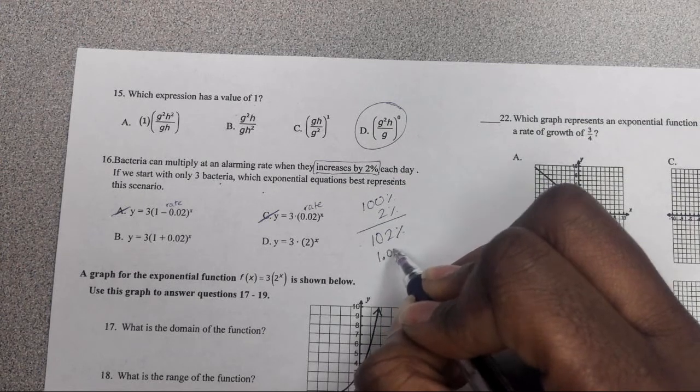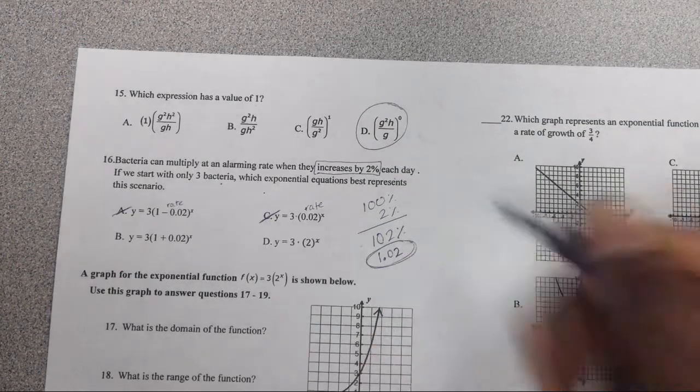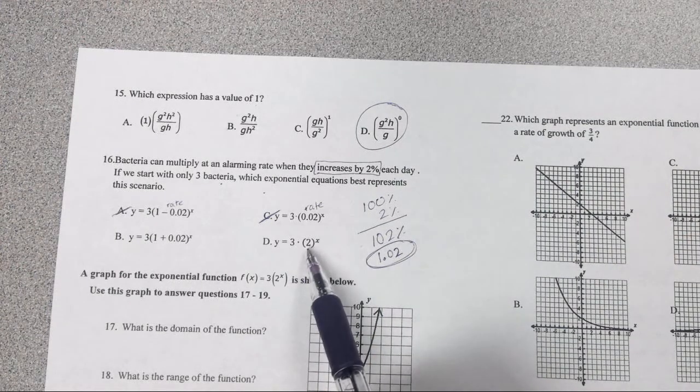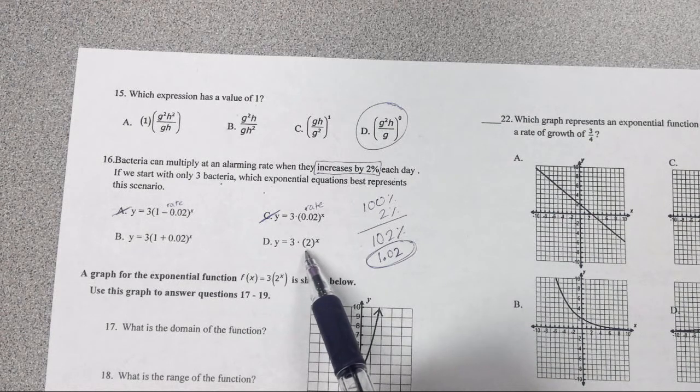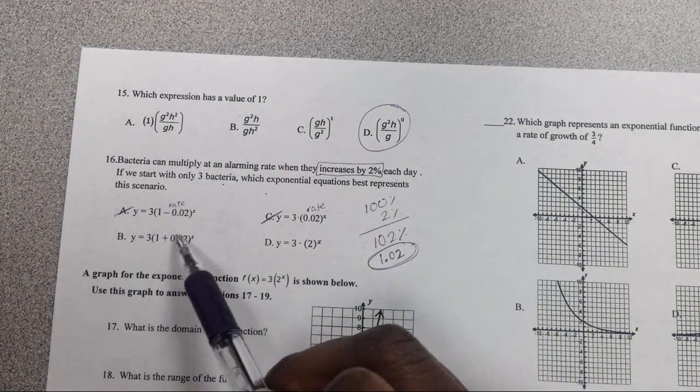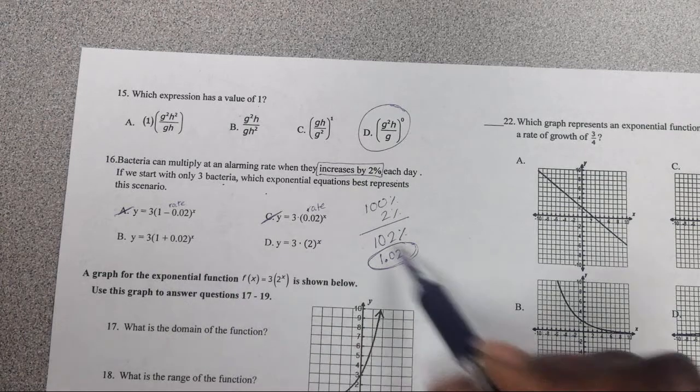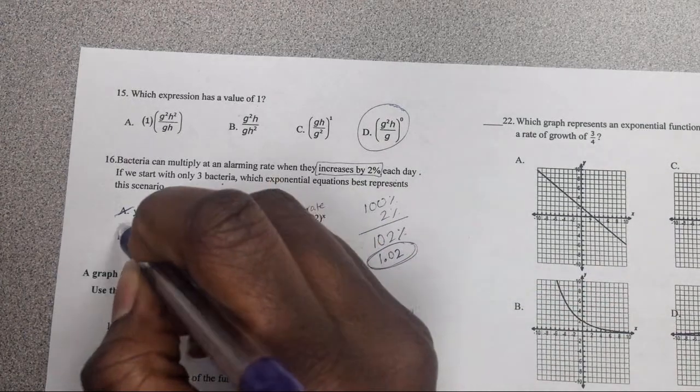So that leaves us 1.02. That's what we're looking for. Does that look like 1.02? Definitely not. If you do the math right here, 1 plus 0.02, if you put it in the calculator this is the same one that's equivalent here.